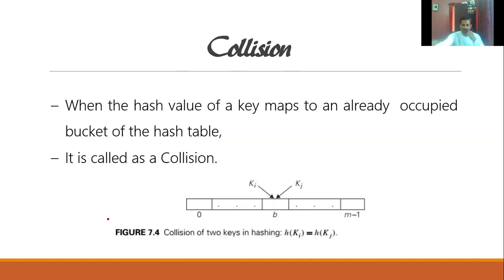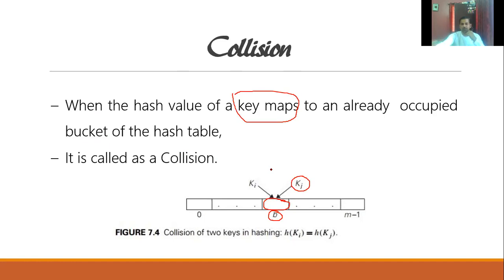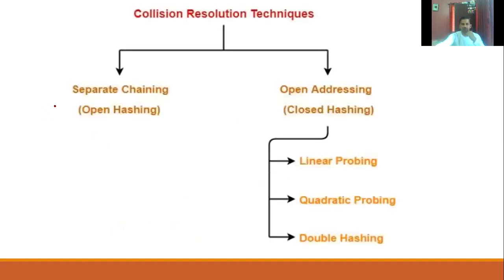There is a problem called collision. Collision occurs when the hash value of a key maps to an already occupied bucket of the hash table. For example, key k_i maps to index value p, and when we want to insert another element k_j, it also generates the same key value p. This means we're supposed to place both k_i and k_j in the same location, which is a problem — this is called a collision.